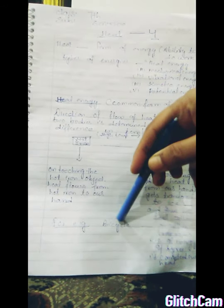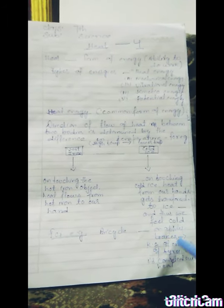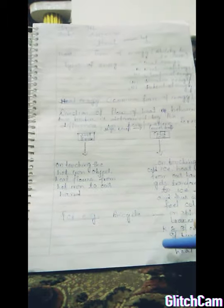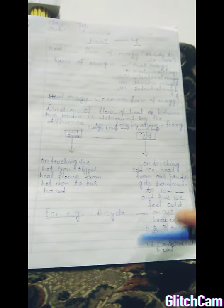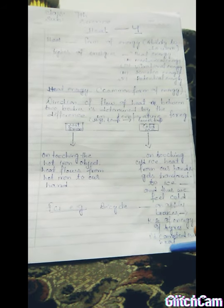I will show you some examples of flow of heat. First example: a bicycle. When a bicycle is moving, it has kinetic energy — the energy possessed by a body due to its motion. When we apply the brakes, the kinetic energy is converted into heat energy.